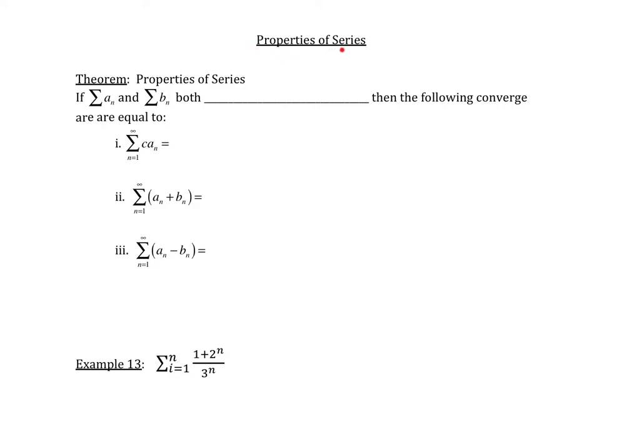Let's look at properties of series. So suppose we have two infinite series, call them a_n and b_n, and let's say that both of these are convergent.